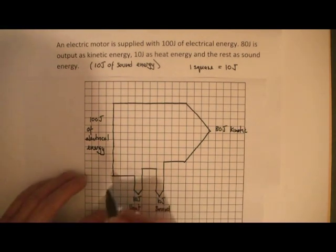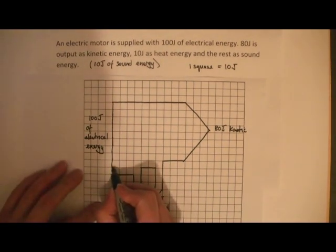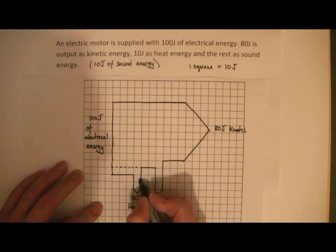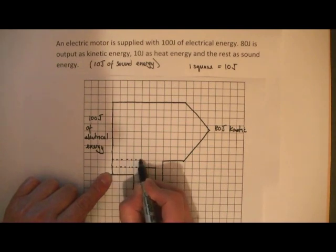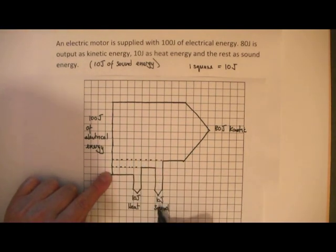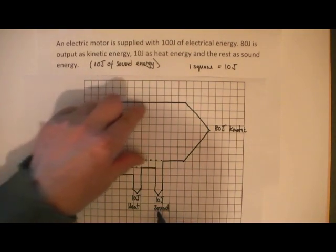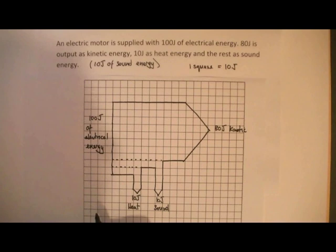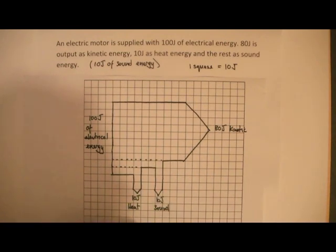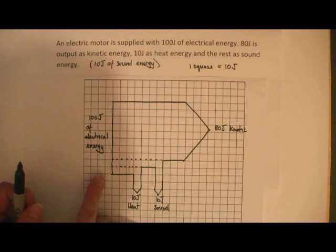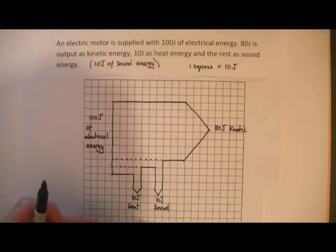If I draw some dotted lines — you wouldn't normally do this — that portion shows the energy that's turned into heat energy, that portion has turned into sound energy, and all the rest has turned into kinetic energy. We've obeyed the law of conservation of energy, so the total amount of energy coming out equals the total amount going in. The Sankey diagram clearly shows what happens to all the energy that goes in: how much comes out as heat, how much as sound, and how much as kinetic energy.